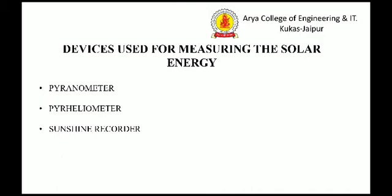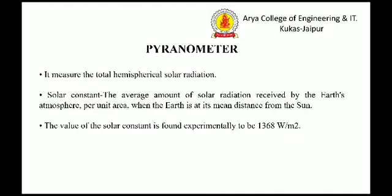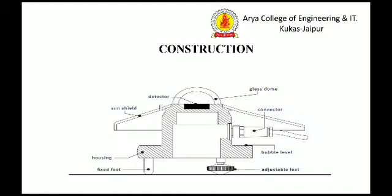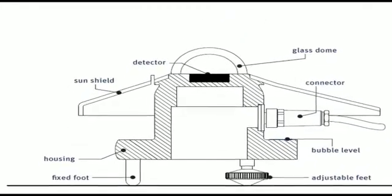The first device is the pyranometer, which measures total hemispherical solar radiation. Related to this is the solar constant — the average amount of solar radiation received by the Earth's atmosphere per unit area when the Earth is at its mean distance from the Sun. The value of the solar constant is found experimentally to be 1368 watts per meter squared.